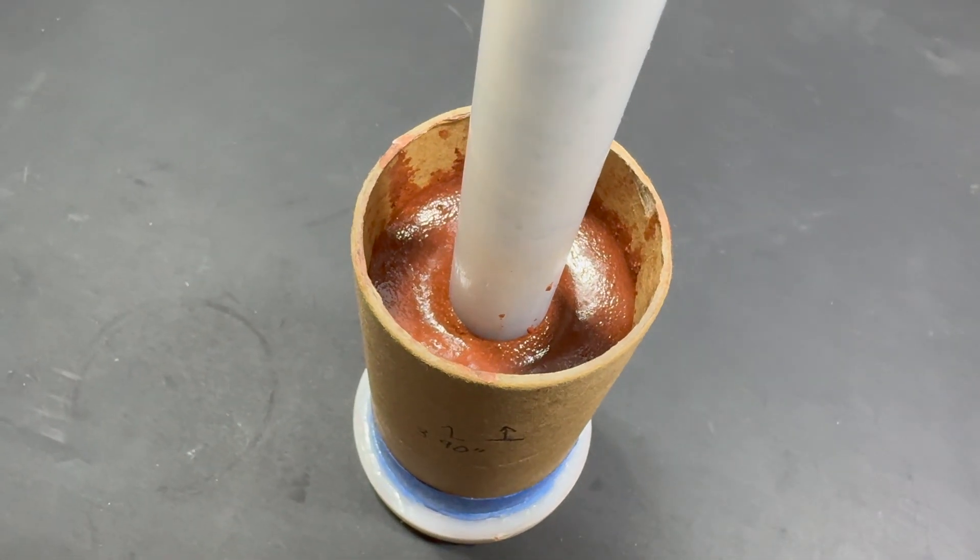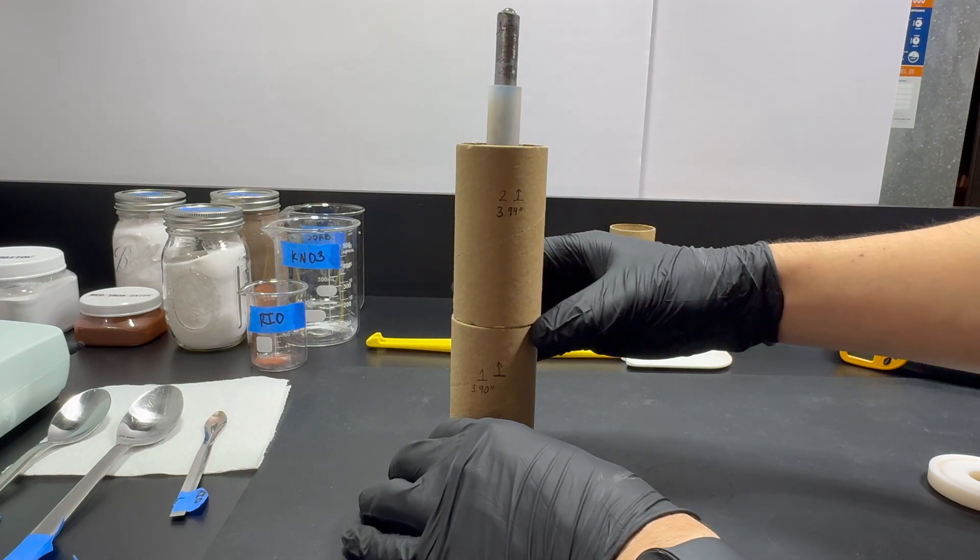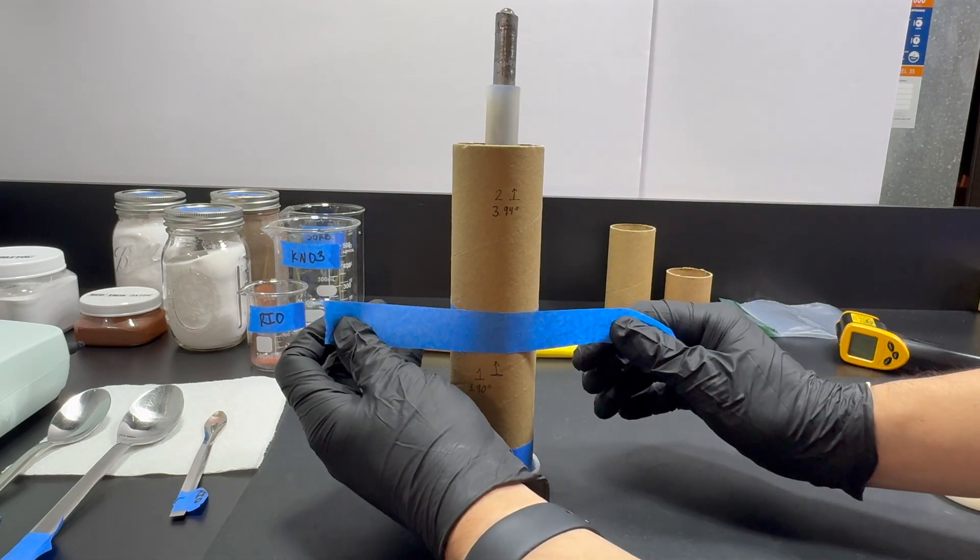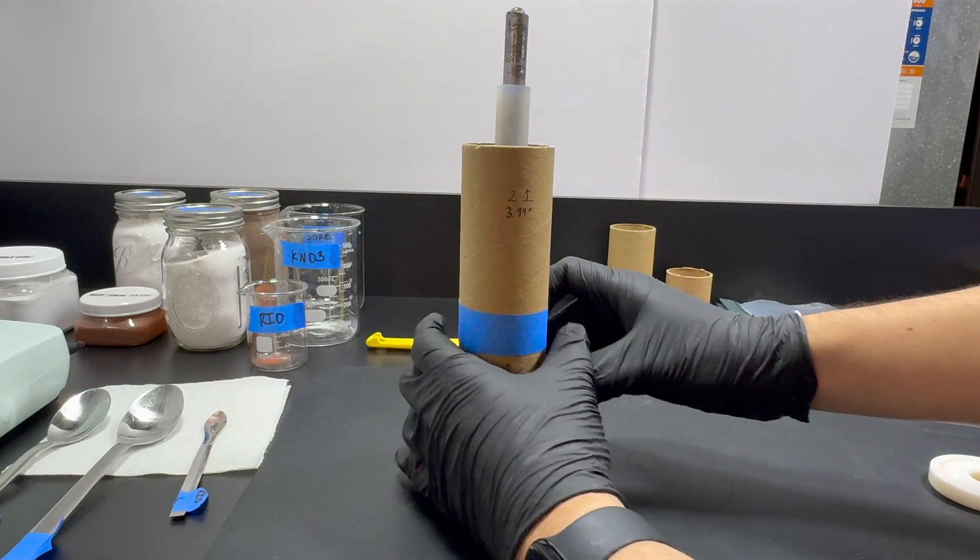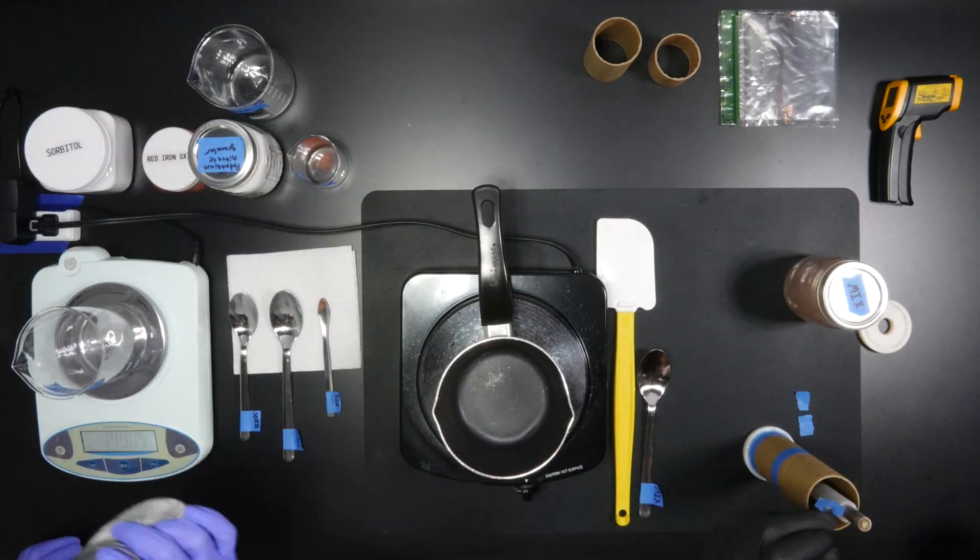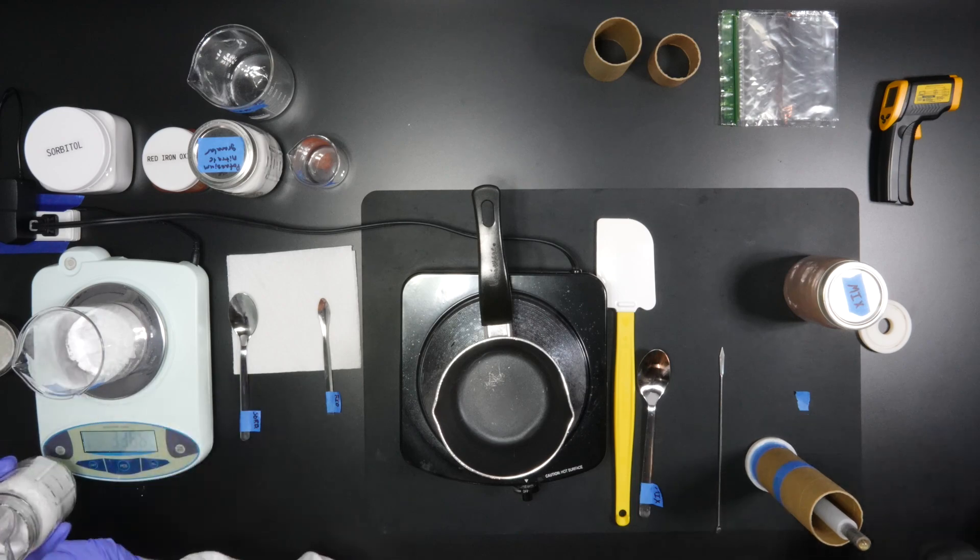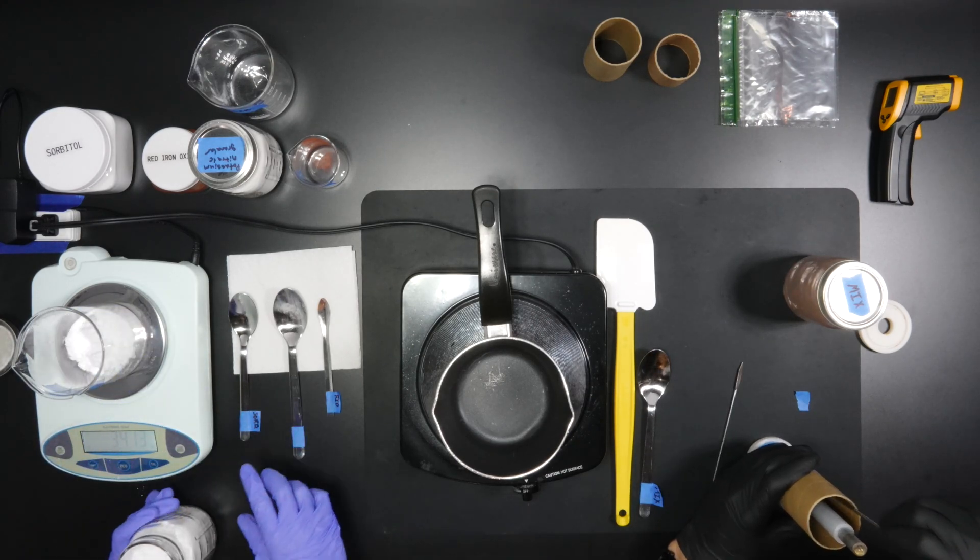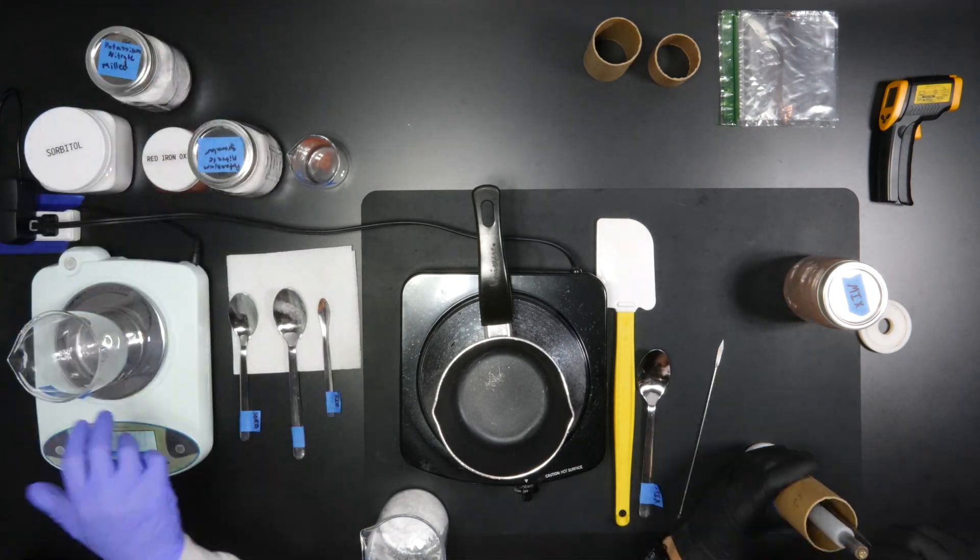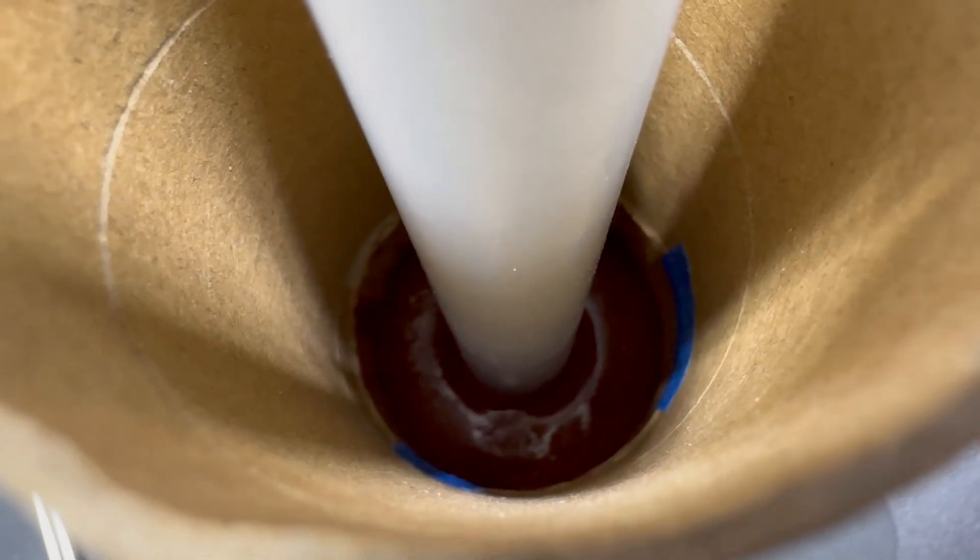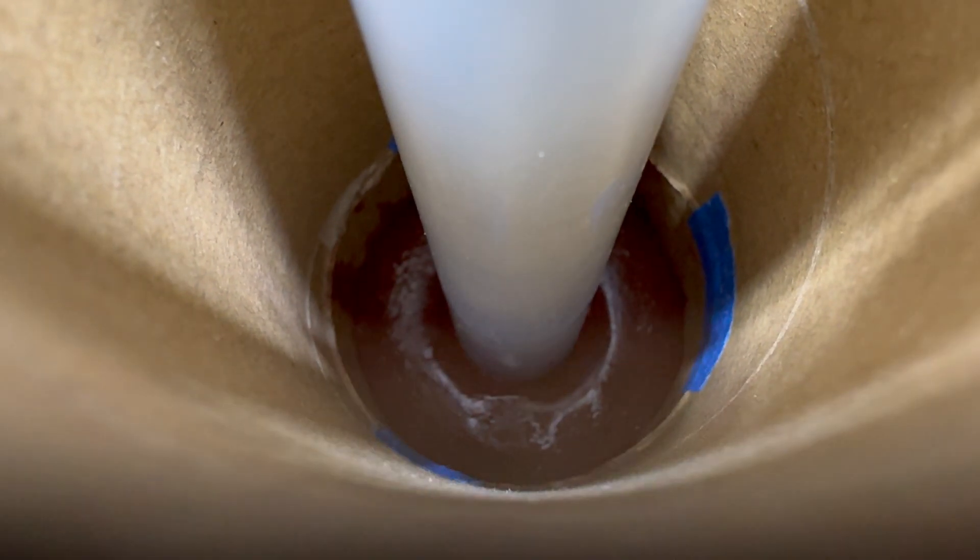Once the first pour is done, I secure the next section with regular painter's tape. I won't bore you with the measuring and melting again, it's the same every time. While my girlfriend measures the chemicals, I tape 3 small pieces inside the liner to help better secure it to the next section. You can see 2 of the 3 pieces in this shot.